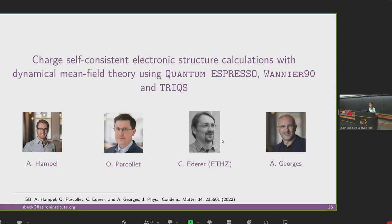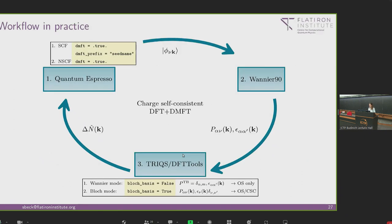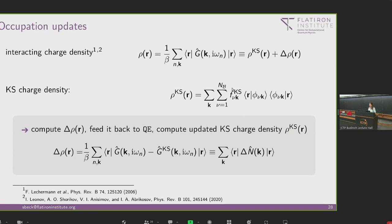Charge full self-consistency is a recent implementation together with colleagues Alex Hampel, Olivier Parcollet, Claude Ederer from ETH Zurich, and Antoine Georges. The key step is computing charge density updates and feeding them back from DMFT to DFT in Quantum ESPRESSO. The interacting charge density is expressed as a sum over the lattice Green's function traced over K and Matsubara frequencies in real space, decomposed as the Kohn-Sham charge density plus a correction delta rho. We subtract the noninteracting Kohn-Sham Green's function from the interacting lattice Green's function to define delta n, feed it back to Quantum ESPRESSO, recompute the density and potential, construct new Wannier functions, and iterate.